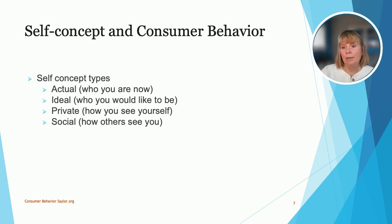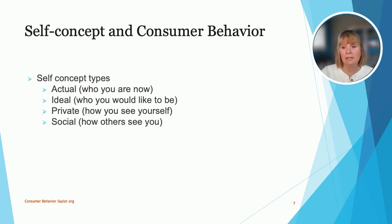Some consumers buy products to help them become the person they want to be. For example, you might buy new outdoor recreation equipment because you want to be more active, or you might buy clothing that doesn't quite fit now but you plan to lose 10 pounds. These are examples of self-concept. There are four types of self-concept: actual, ideal, private, and social.